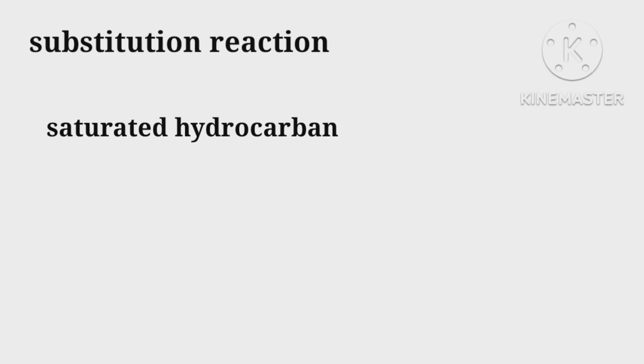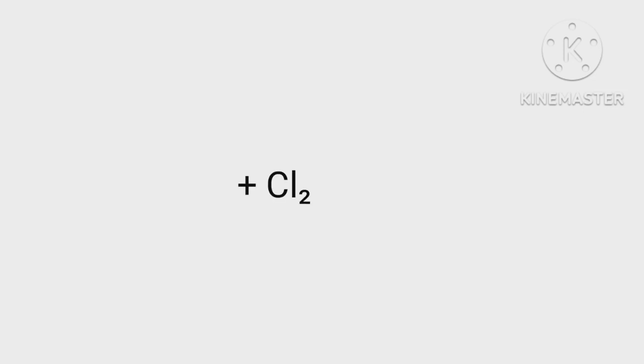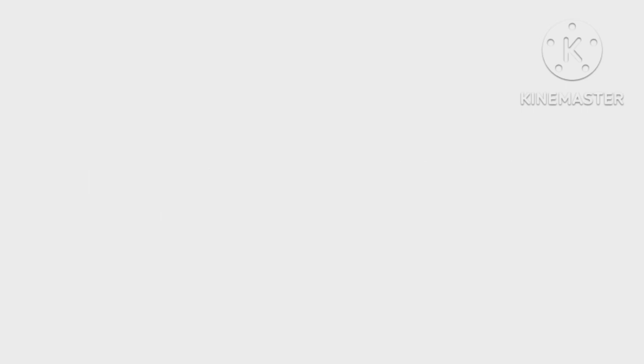Saturated hydrocarbons are very tough to be broken, but in the presence of sunlight, they give a very large number of hydrocarbons in the form of a chain reaction. When chlorine replaces hydrogen atoms one by one, it is called a substitution reaction.